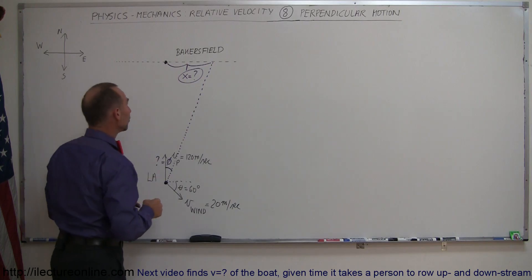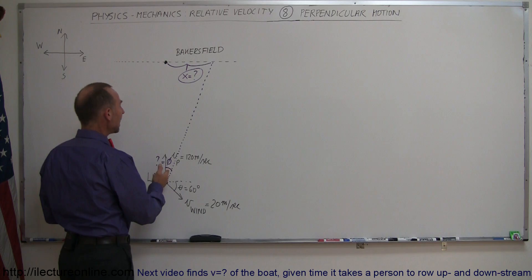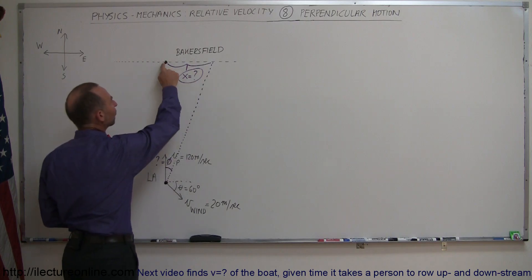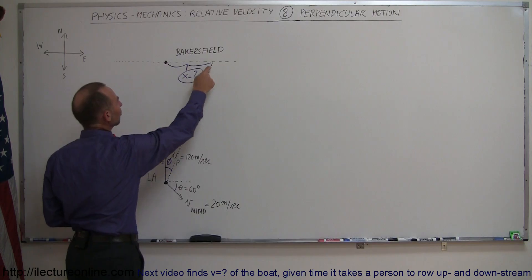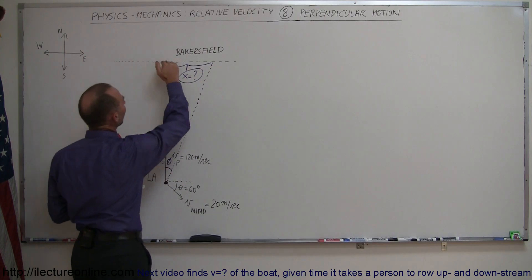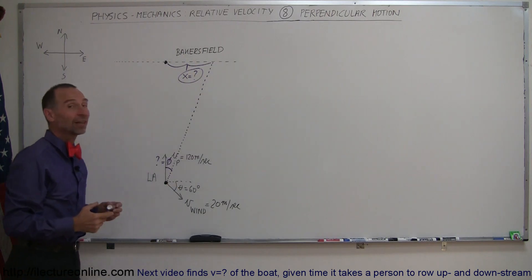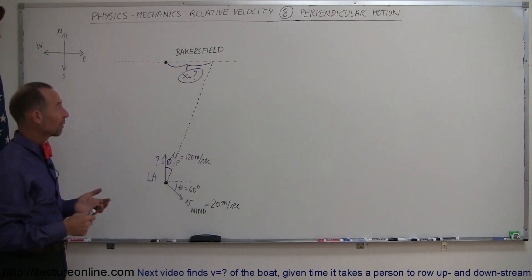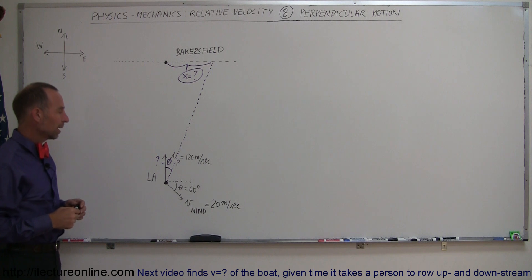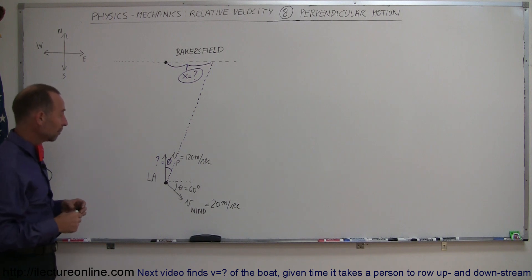So the question is: what angle will he be pushed off at, where will he end up, and how far away from Bakersfield will he be when he reaches the line that runs directly east-west through Bakersfield? Let's see if that was a serious error by the pilot or not.